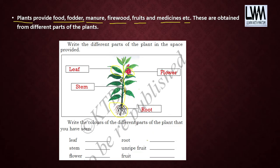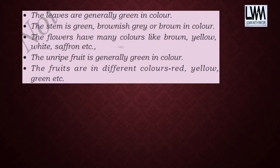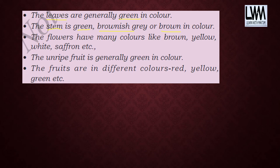Generally, leaves are green in color — remember this. The reason why leaves are green you will study in higher classes. As of now, remember that generally all leaves are green. The stem is either green, brownish-gray, or brown in color.